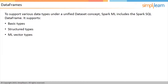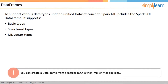Let's first talk about data frames. Machine learning is applicable to various data types, which include text, images, structured data, and vectors. To support these data types under a unified data set concept, Spark ML includes the Spark SQL data frame. These data frames provide support to various basic types, structure types, and ML vector types. You can create a data frame from a regular RDD, either implicitly or explicitly.